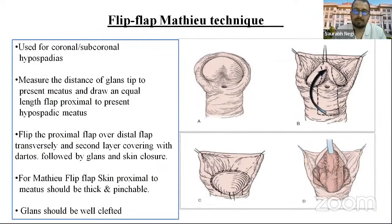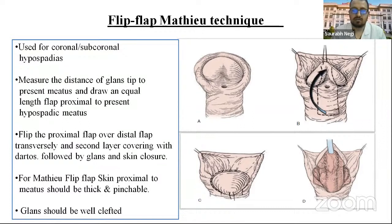Flip-flap Matthew technique is used for coronal and subcoronal hypospadias. We first measure the distance from glans tip to the present meatus and draw an equal flap proximal to the hypospadias meatus. The proximal flap is flipped over the distal flap transversely, and the second layer is covered with dartos followed by glans skin closure. For the Matthew flip, skin proximal to the meatus should be thick and pinchable, and the glans should be well-developed.